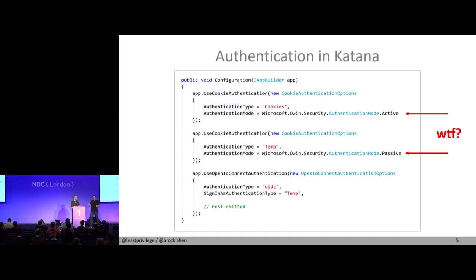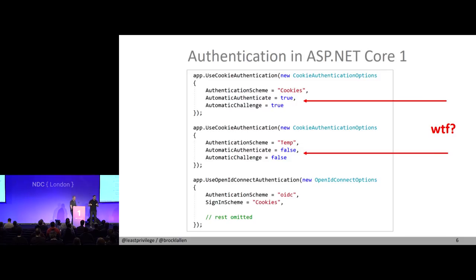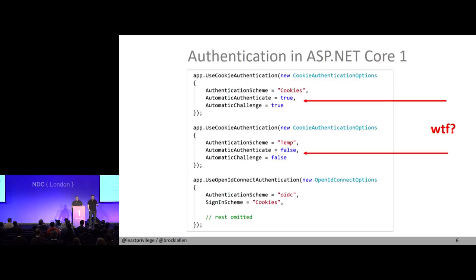In ASP.NET Core they had the chance to make everything better. But instead of just having active and passive, you could now make them active on the way in and passive on the way out. They had something like 'automatic authenticate equals true' meaning that's your default authentication method, and 'automatic challenge' for sending the user to a login page. They changed these default values many, many times so that in the end I didn't know which middleware was passive, which was active. And again, if by accident you set two middlewares to automatic authenticate — undefined behavior.